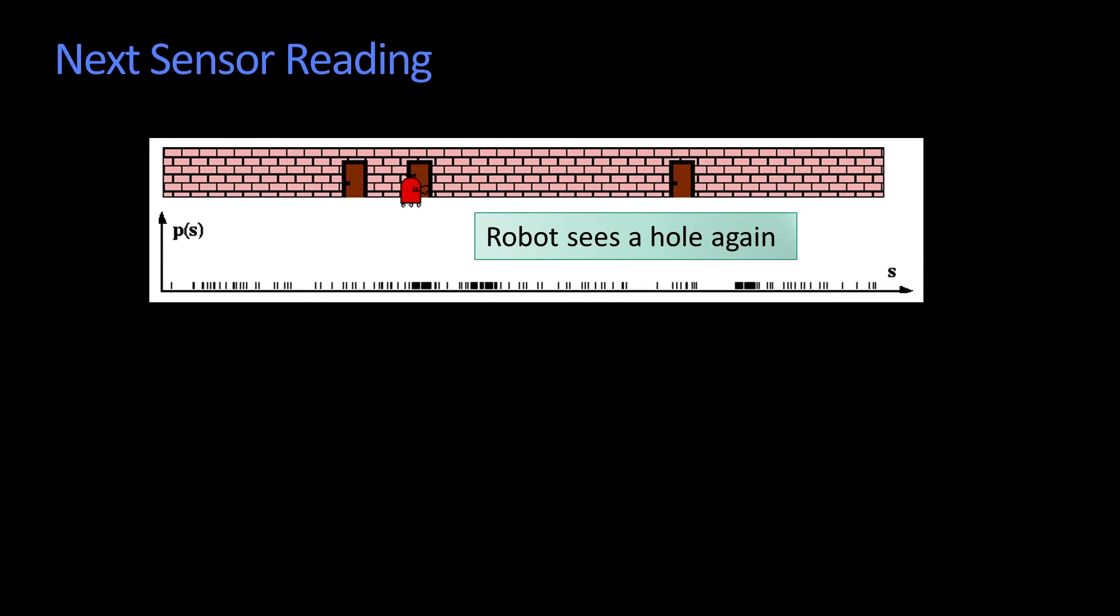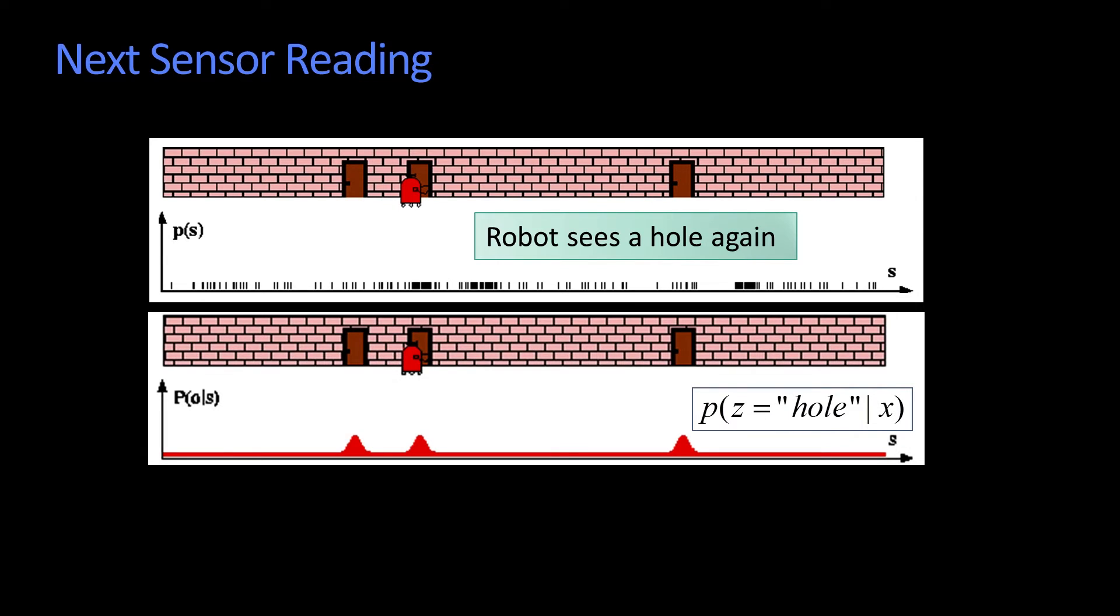The robot sees another hole. So that means p of z given x is the same thing I had before, because I got the same reading I had before. I saw a hole. And again, I multiply,